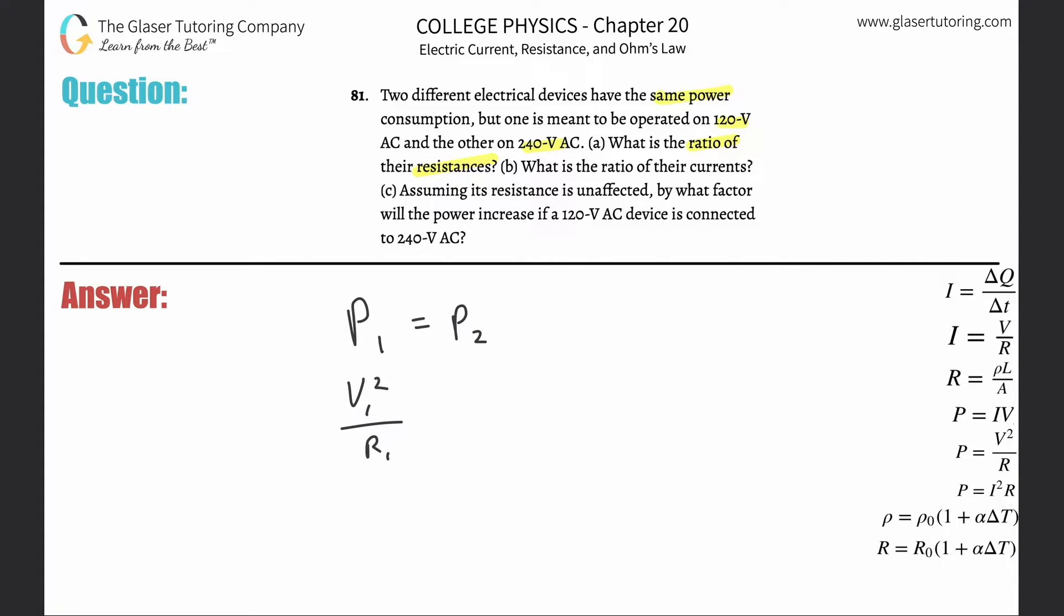What we need to do now is substitute that in, so this would be V1 squared over R1 equals V2 squared over R2. Now they want to find the ratio of their resistances.